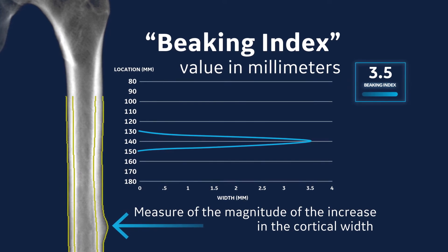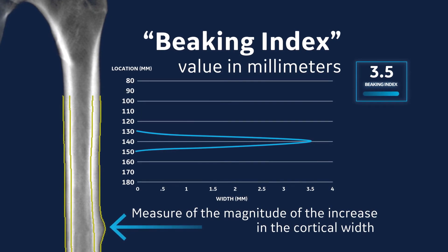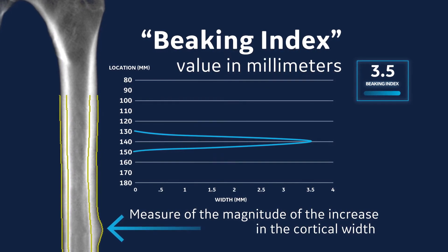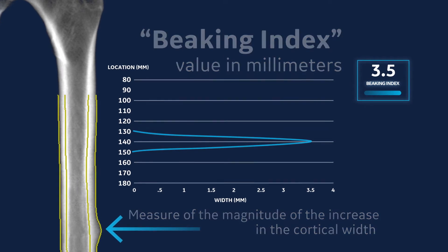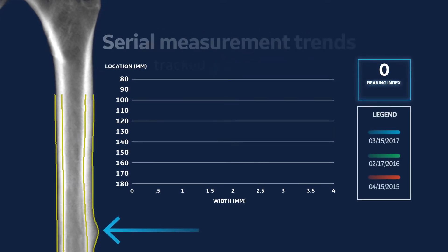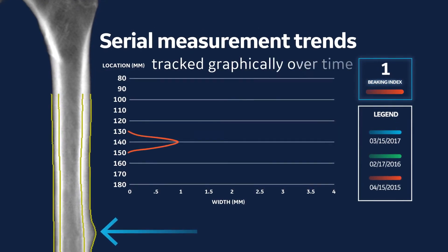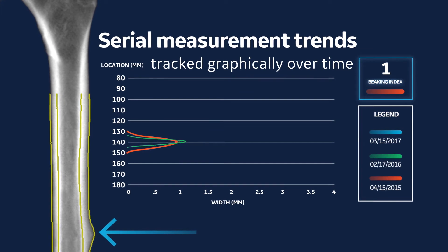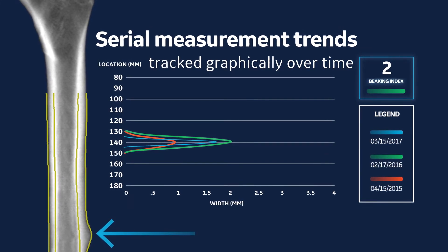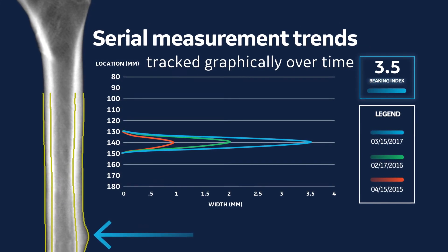This analysis can quickly be run on a femur scan for both BMD and AFF assessment, with serial measurement trends tracked graphically over time. This allows the visualization and quantification of any potential AFF sites.